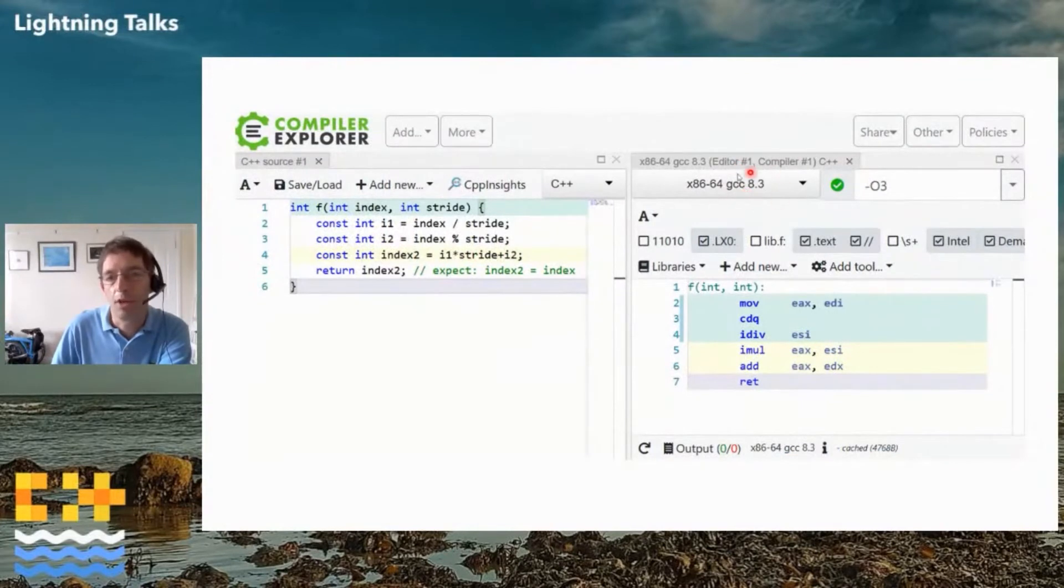And then comes GCC. At the time, GCC8, but 9 has the same issue. As you can see, it was totally unable to do that transformation. The division and multiplications are still there. So there you go, end of the game. I needed to find another solution.